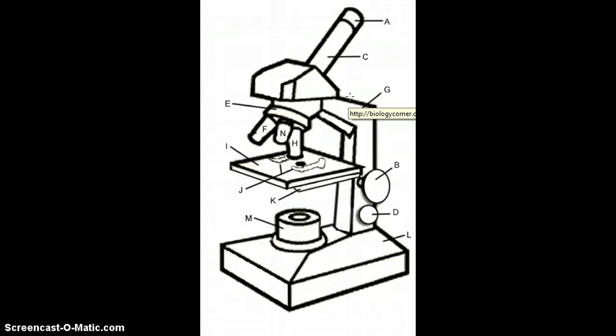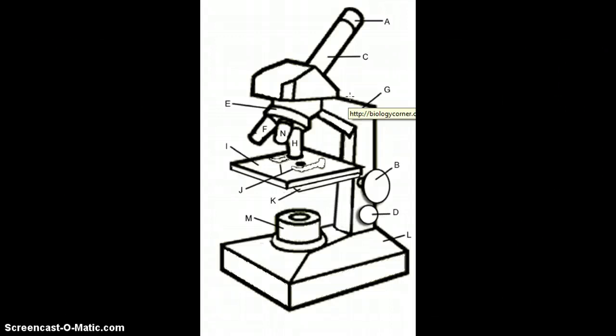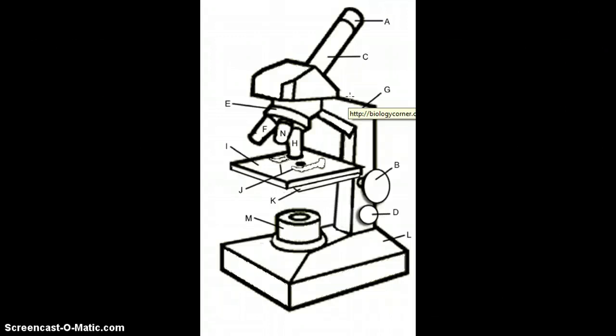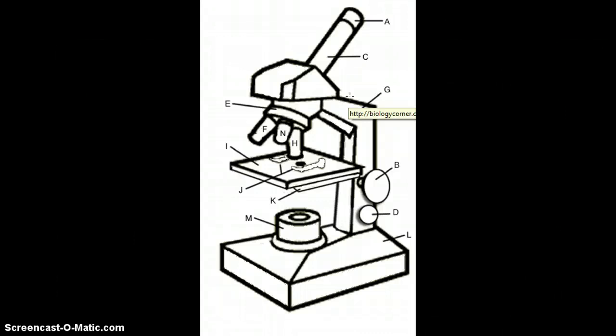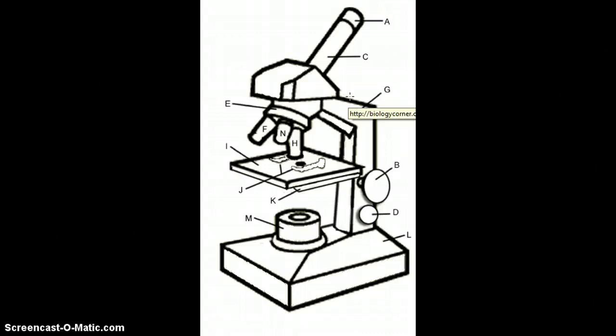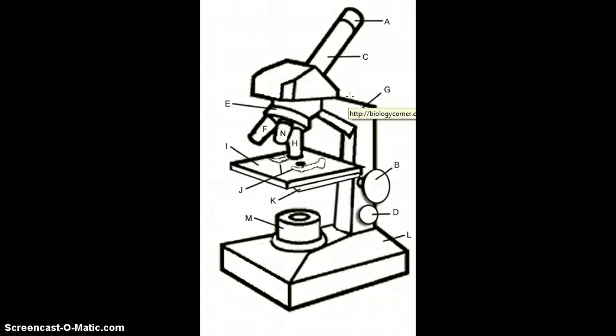The body tube allows the light from the objective to pass upward to form the first magnified image. That image is further magnified by the eyepiece or ocular. The eyepiece is usually ten times.